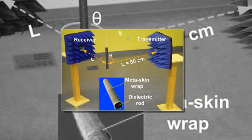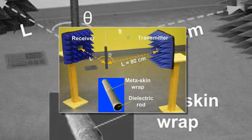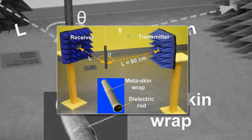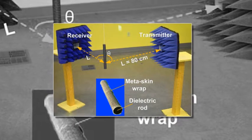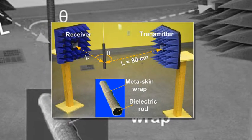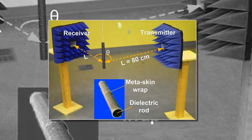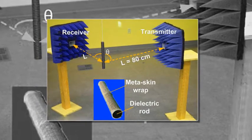The rings create electric inductors, which resist changes in current passing through them, and the gaps create capacitors, which store electrical energy in a temporary electric field. Together they create a resonator that can trap and suppress radar waves at a certain frequency.